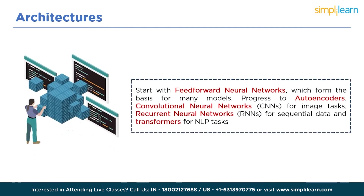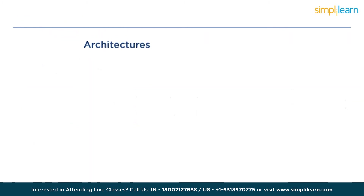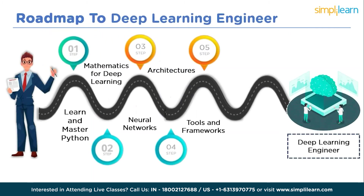The next step is architectures. Familiarize yourself with various neural network architectures. Start with feedforward neural networks, then progress to autoencoders, Convolutional Neural Networks (CNNs) for image tasks, Recurrent Neural Networks (RNNs) for sequential data, Transformers for NLP tasks, Siamese networks for similarity comparison, Generative Adversarial Networks (GANs) for generating data, and explore evolving architectures like NEAT (Neural Evolution of Augmenting Topologies).